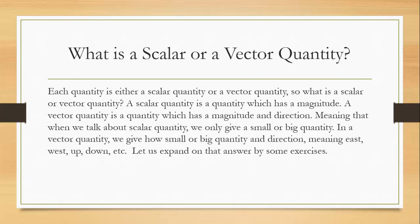What is a scalar or vector quantity? Each and every quantity is either a scalar quantity or a vector quantity. A scalar quantity is a quantity which has a magnitude, meaning how big or small. A vector quantity is a quantity which has magnitude and direction, meaning east or west, etc.